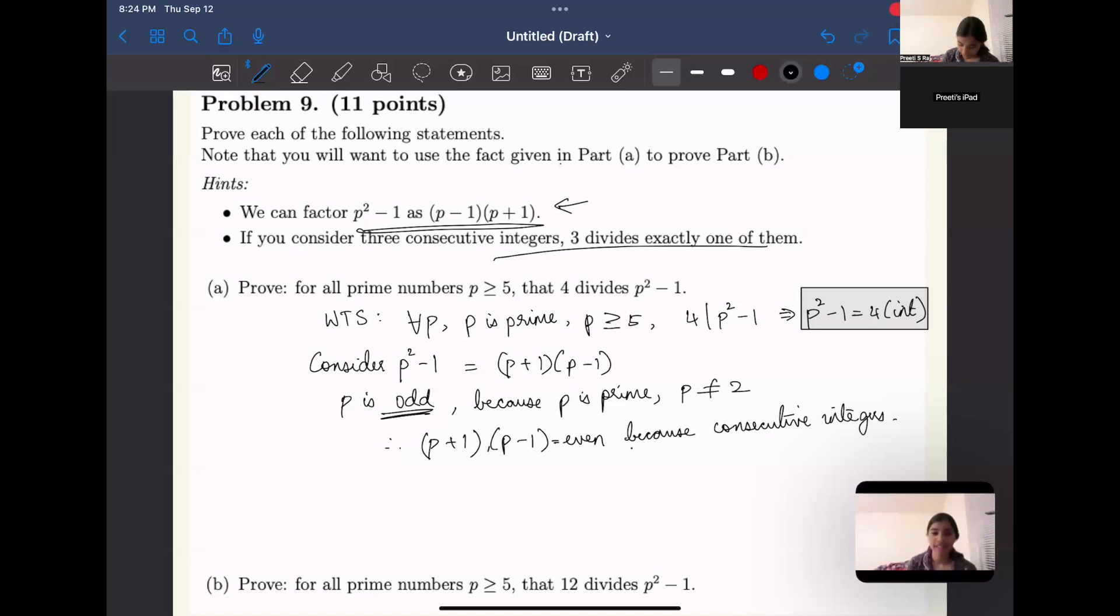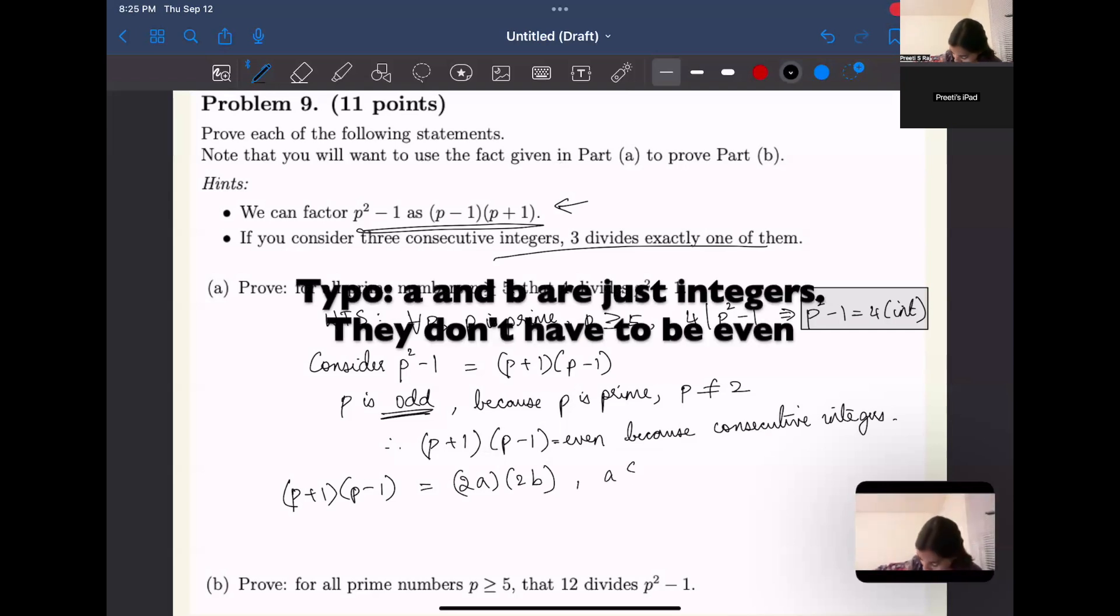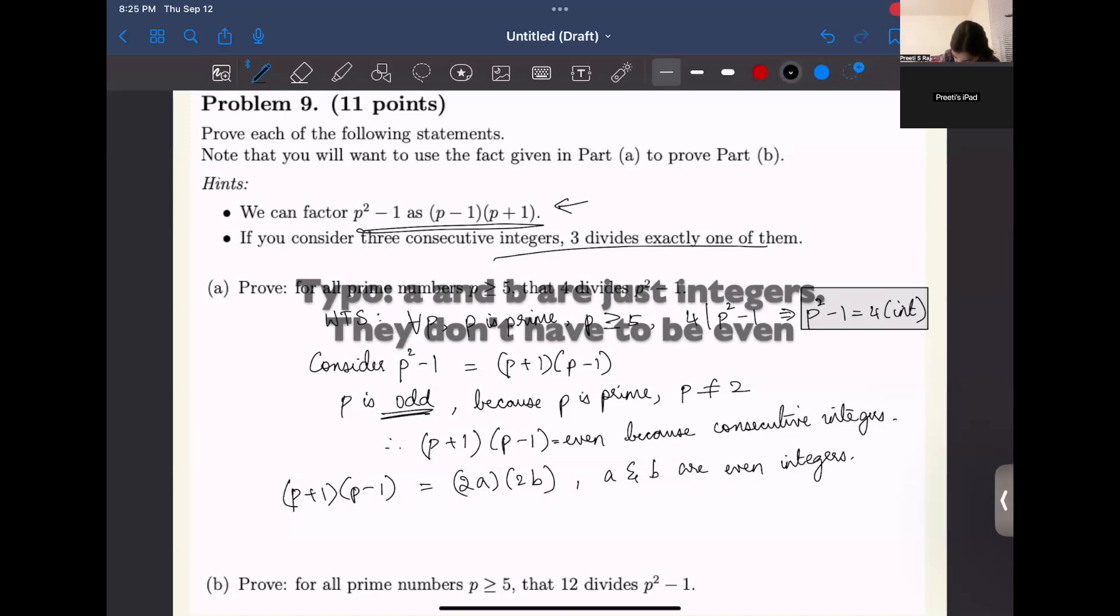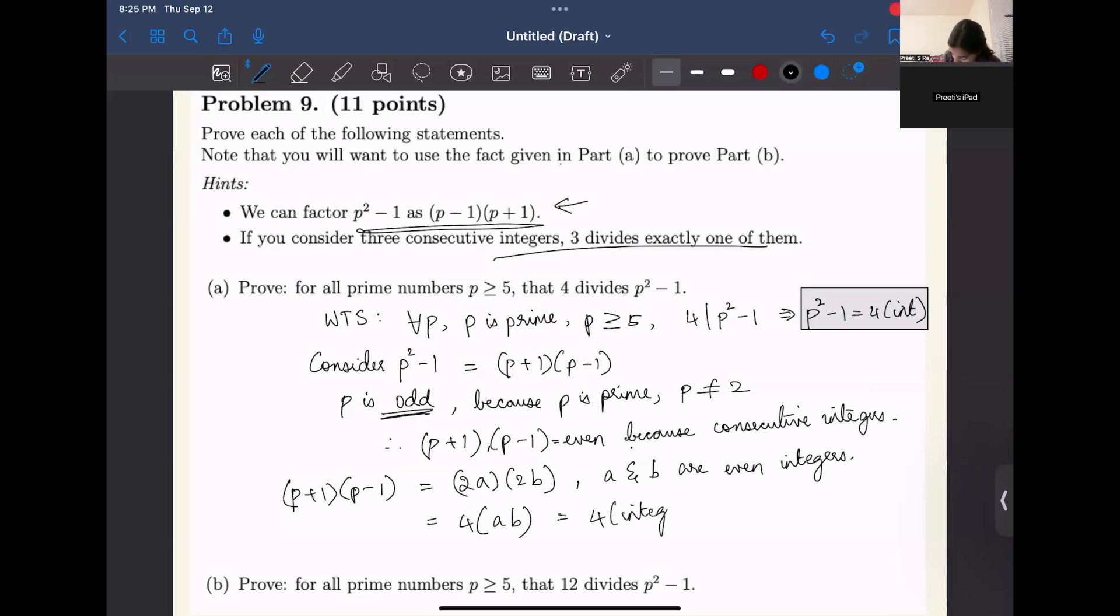So then I can rewrite p plus one times p minus one as 2a times 2b, just because they're even, where a and b are some integers. Which means that it can be written as four times ab, or basically four times an integer, because integer times integer is an integer. And so therefore four divides p squared minus one, and that's my proof.